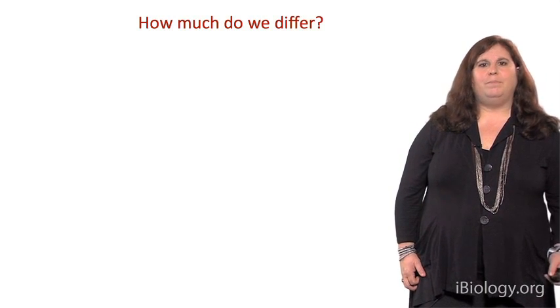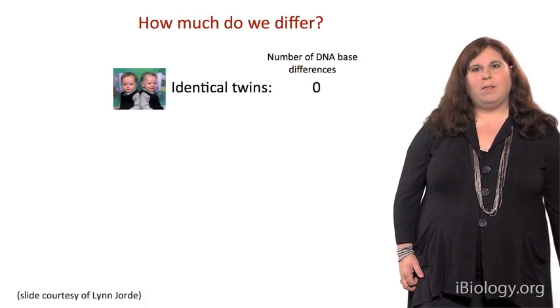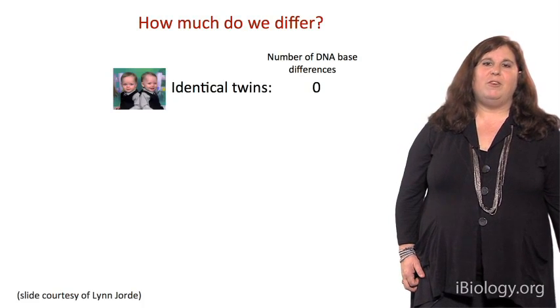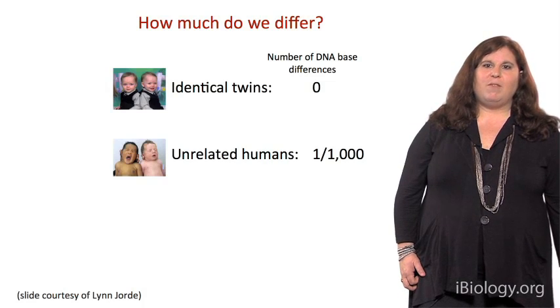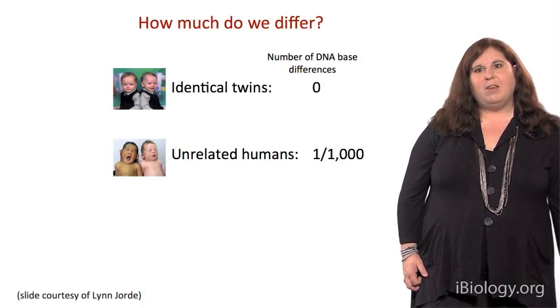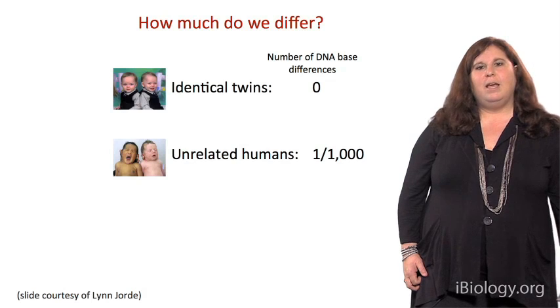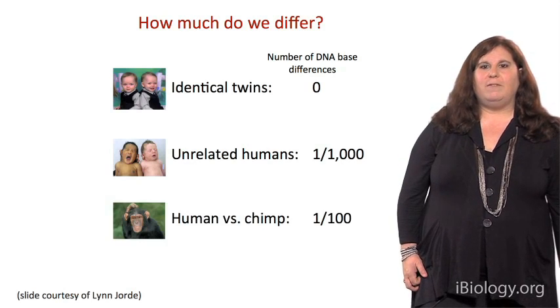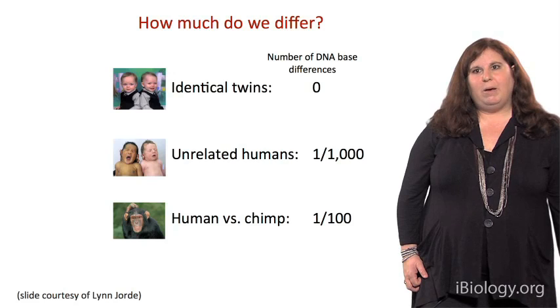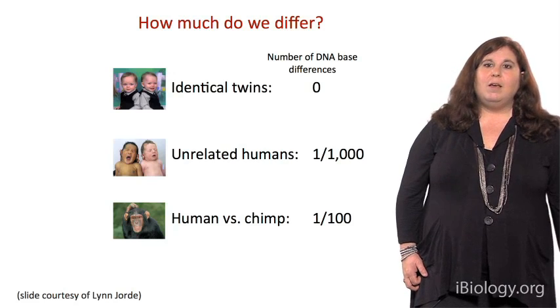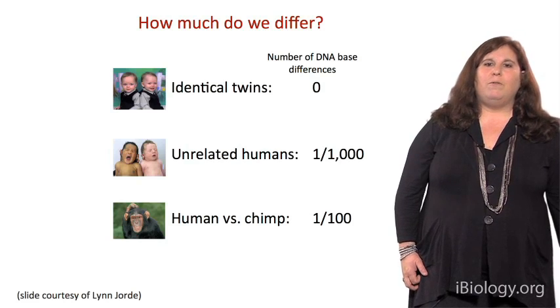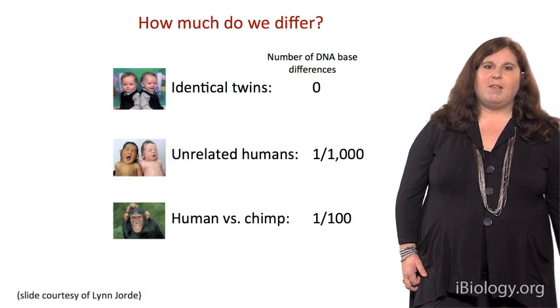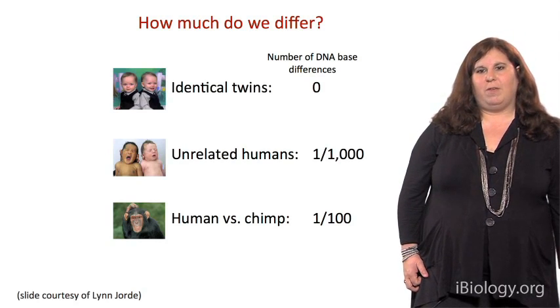So, how much do we differ? Well, identical twins have no differences at the nucleotide level. If we compare unrelated humans, we differ at about 1 out of 1,000 nucleotide sites. And if we compare humans to our closest genetic relative, the chimpanzee, we differ at about 1 out of 100 sites. As a whole, our species is very similar. And that simply reflects our recent common ancestry from Africa within the past 100,000 years.